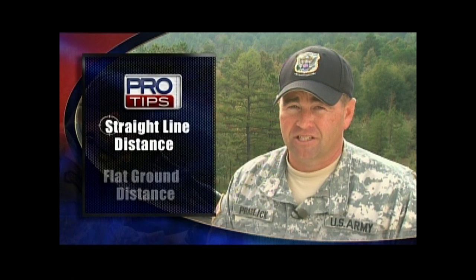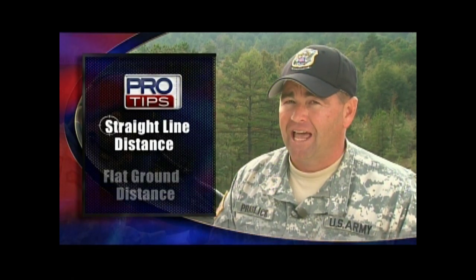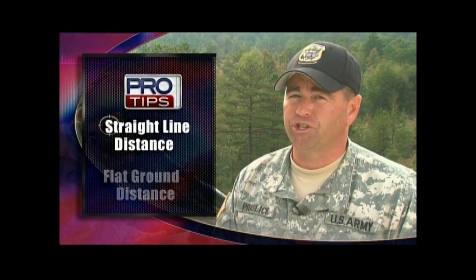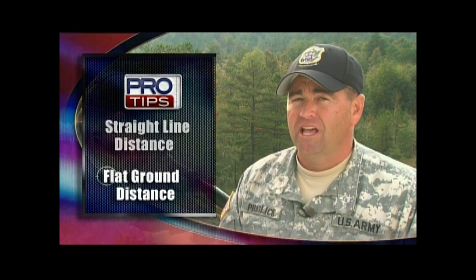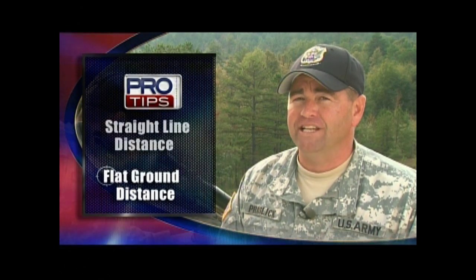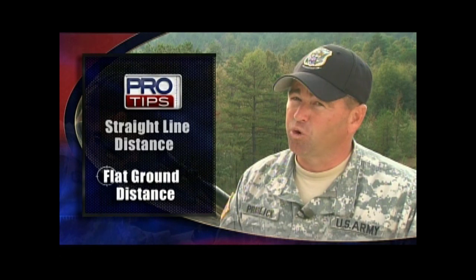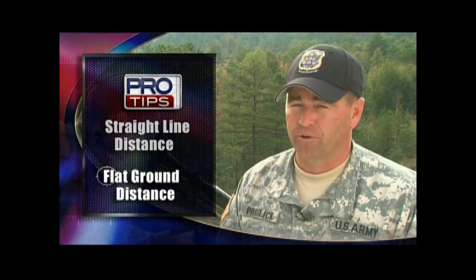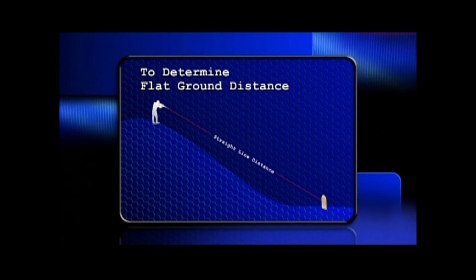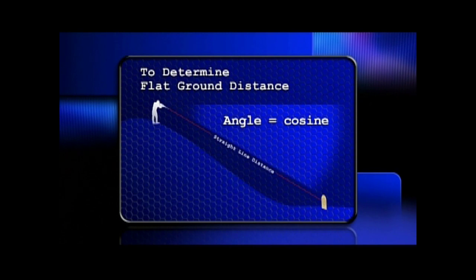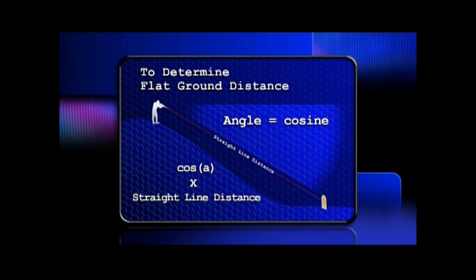To properly identify this effect, we need to first understand two terms. First, straight line distance — this is the distance between yourself and the target as range estimated or determined by a laser range finder. The second term is flat ground distance. This is the actual distance that the bullet will feel gravity's effect as it pulls it to the ground. This distance will get less and less as the angle to the target increases. To properly determine the flat ground distance, you need to take the cosine of the angle between yourself and the target, then multiply that cosine by your straight line distance.